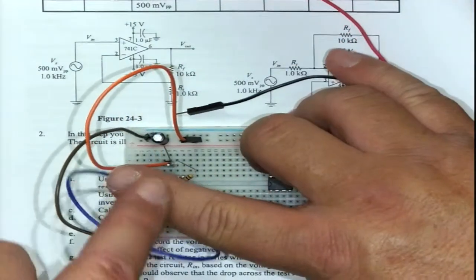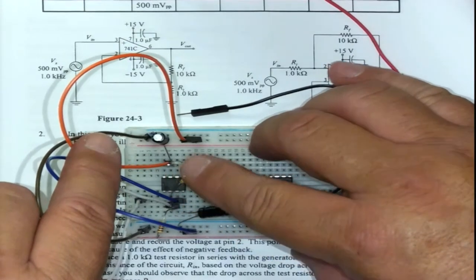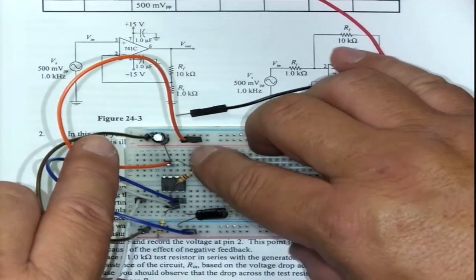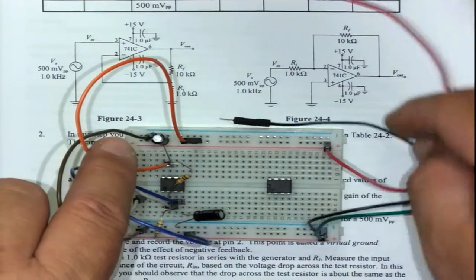To recap: plus, minus, I jump the ground to minus, or the zero volt to the top blue line as well. Right, awesome.